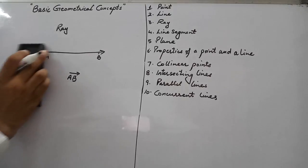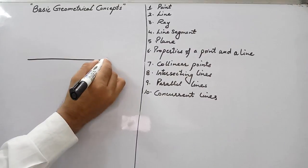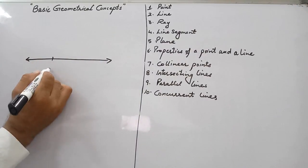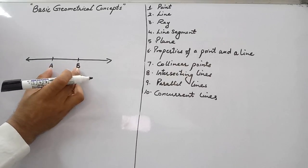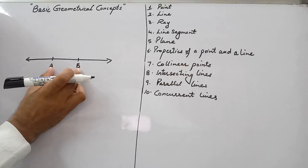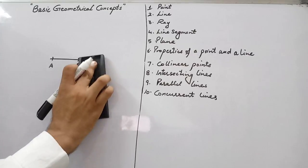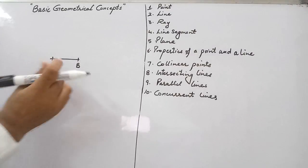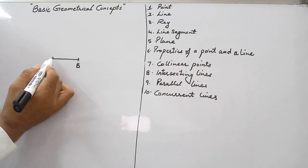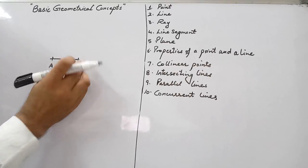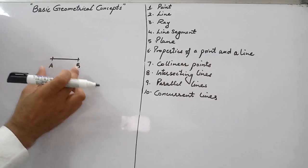Next is line segment. A line segment is a portion of a line. If I have a line and I cut one portion of it, I get a line segment. A line segment is a portion of a line which has a definite length — suppose 4.5 cm. A line segment has two end points because it is not extending in any direction. It has a fixed length.